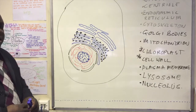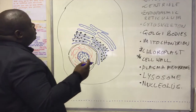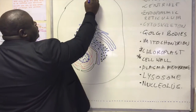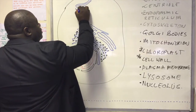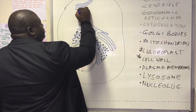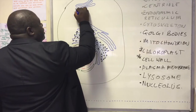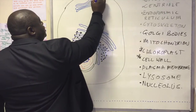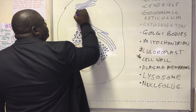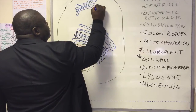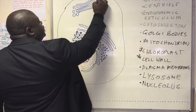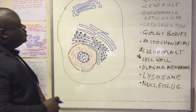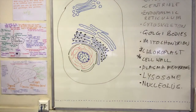Now let's try and compare that to the Golgi body. The Golgi bodies look very similar to the endoplasmic reticulum. However, at the end you'll see a sort of bulbous end, which is like vesicles pinching off. And that tells you that is the Golgi body.